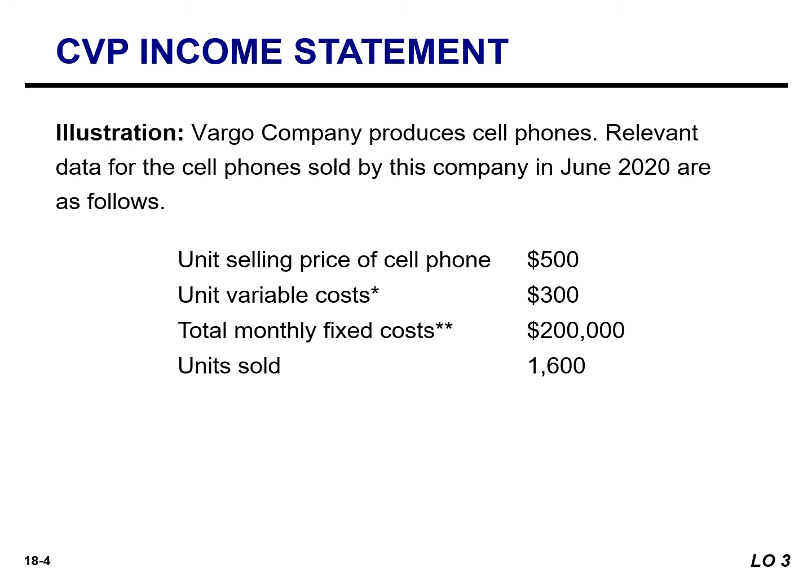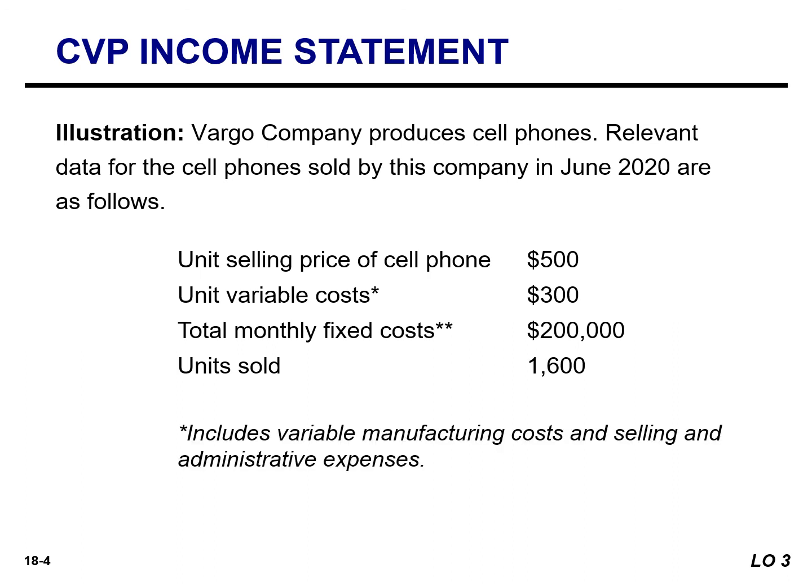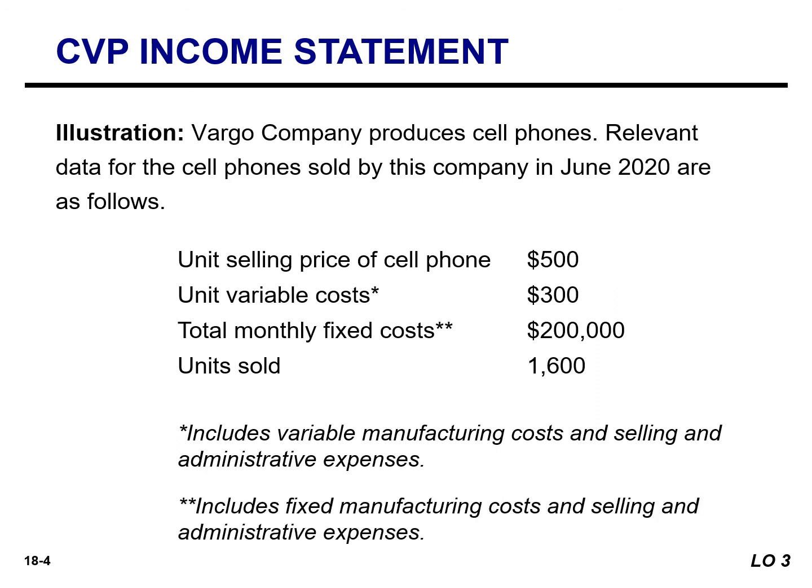We will use Vargo Video Company to illustrate a CVP income statement. Vargo Video produces cell phones. The selling price of a phone is $500. The unit variable cost is $300, and that term includes all costs related to production and sale of the product — both manufacturing costs as well as selling and administrative costs. Our total monthly fixed costs are $200,000, which also includes both manufacturing and selling and administrative costs.